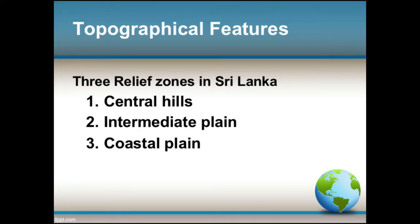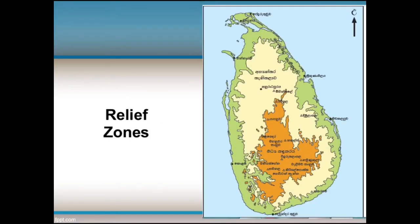Although Sri Lanka is a small island, it has distinct relief features. The three main relief zones in Sri Lanka are the central hills, intermediate plains, and the coastal plain. These relief zones consist of complex relief features which are different from each other. Using this map you can study the relief zones of Sri Lanka.